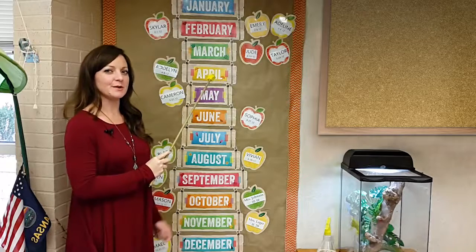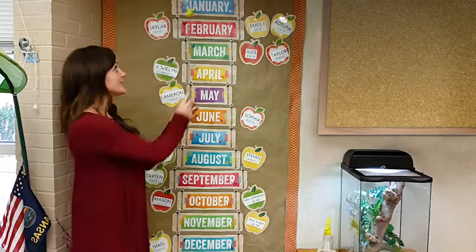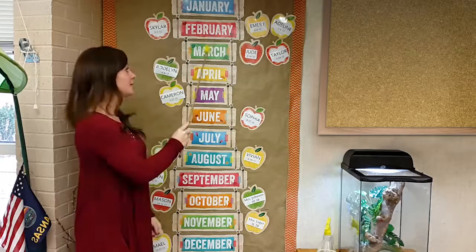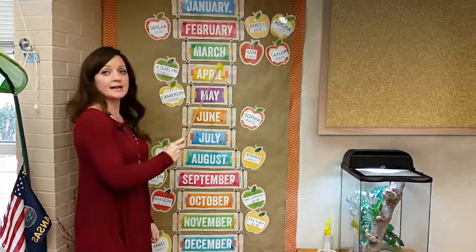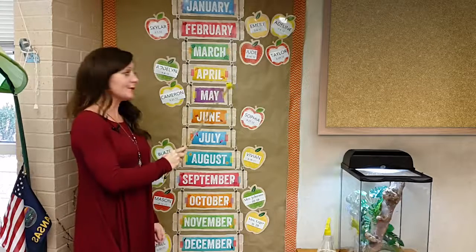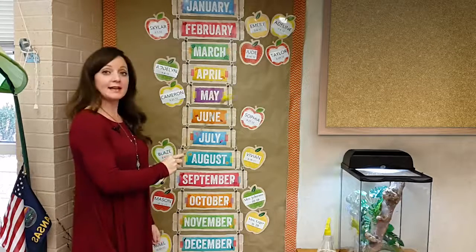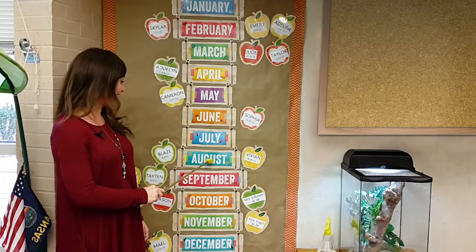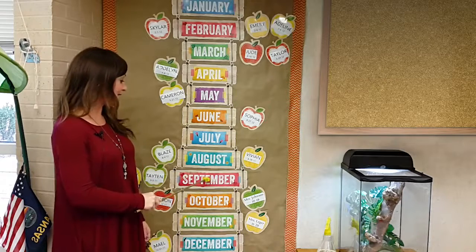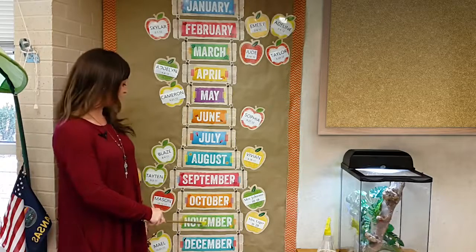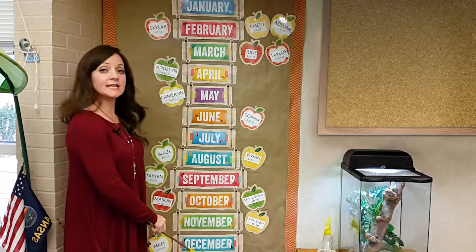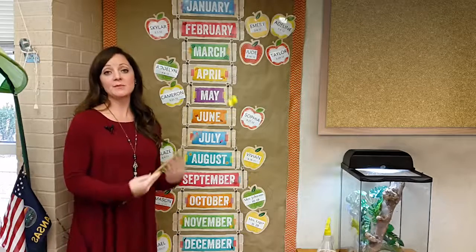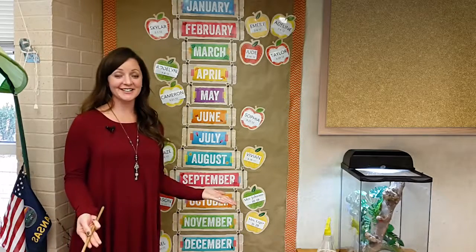So let me sing that song for you. It would go like this: January, February, March and April, May, June, July and August, September, October, November, December. These are the months of the year.